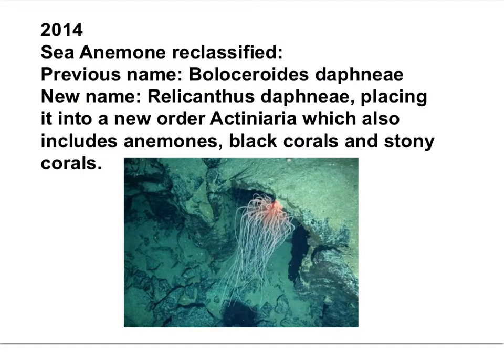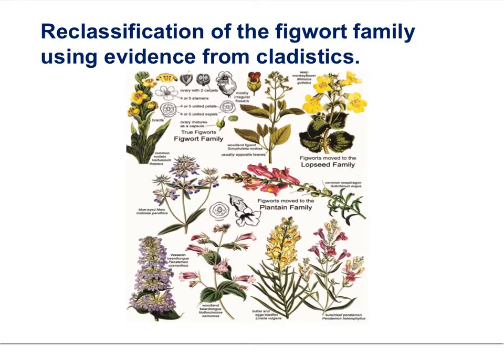In 2014, the sea anemone was reclassified. Scientists examined the DNA of Boloceroides daphniae and renamed the species Relicanthus daphniae, placing it into a new order, Actiniaria, which also includes anemones, black corals, and stony corals. Similarly, the figwort family Scrophulariaceae had been classified based on morphological data — body form — but DNA evidence has resulted in reclassification and new relationships among organisms, with some former figworts now placed into different families.